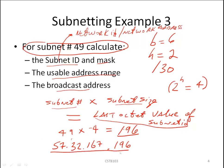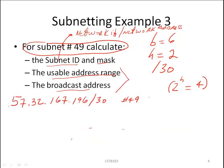And the mask of course is a /30 which we've already calculated. Let me erase some things to make room so that we can calculate the usable address range as well as the broadcast address. Now having the network ID, we can calculate the first usable address which is the network ID plus one, which is 57.32.167.197.